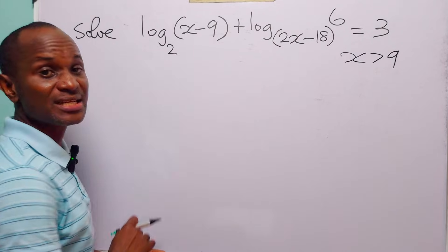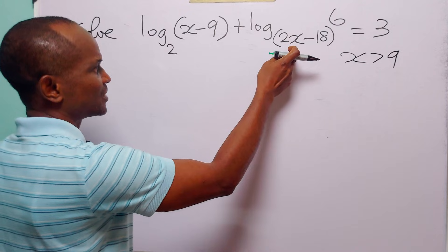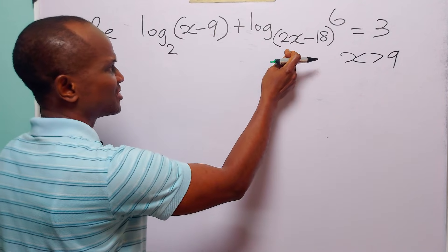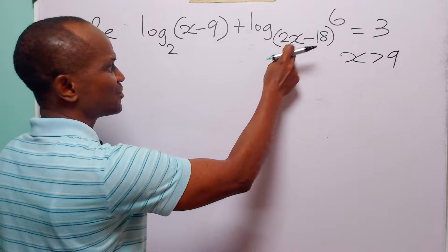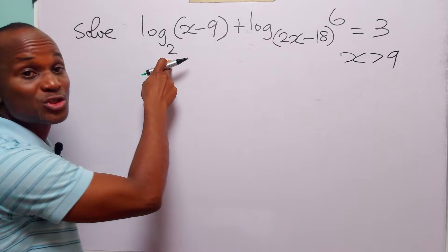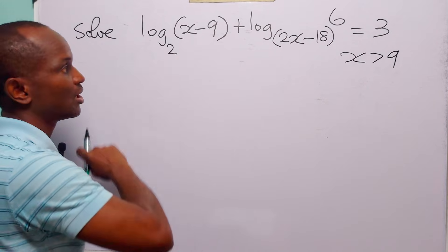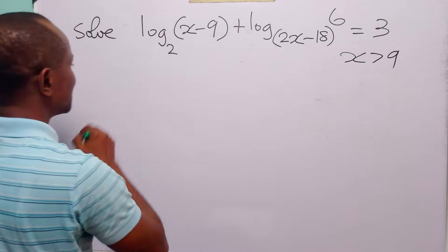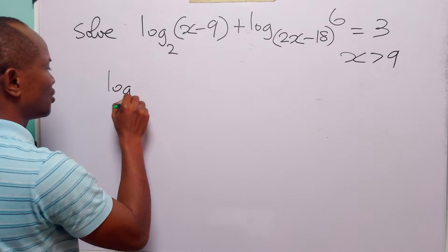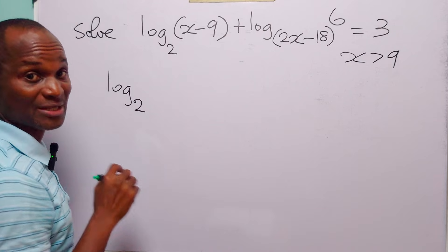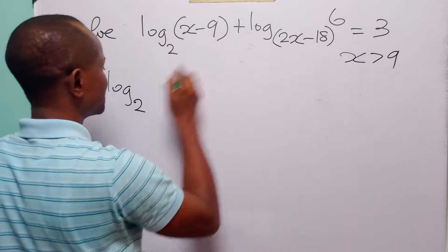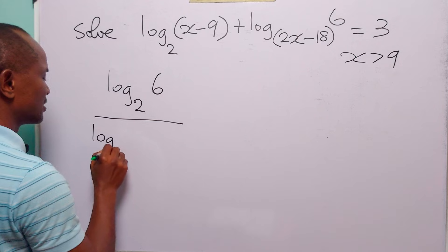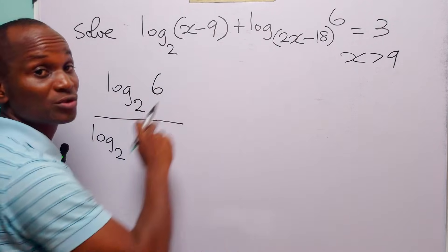Now to simplify this logarithmic equation, we start with this second term. What we are going to do is change the base of this logarithm from base 2x minus 18 to base 2, to match this first term. When we apply the change of base formula for logarithms to this term, it becomes log to base 2. Remember, 2 is the new base, of 6 divided by log to base 2 of the old base.